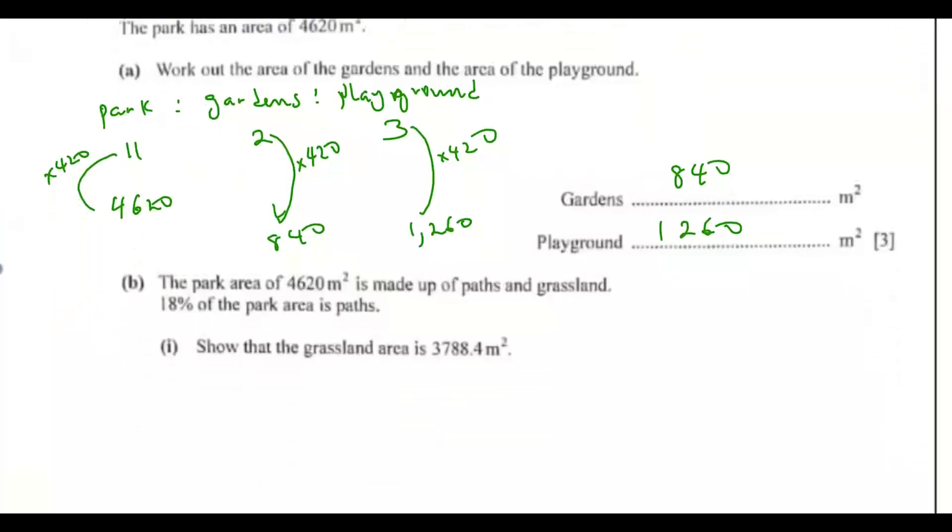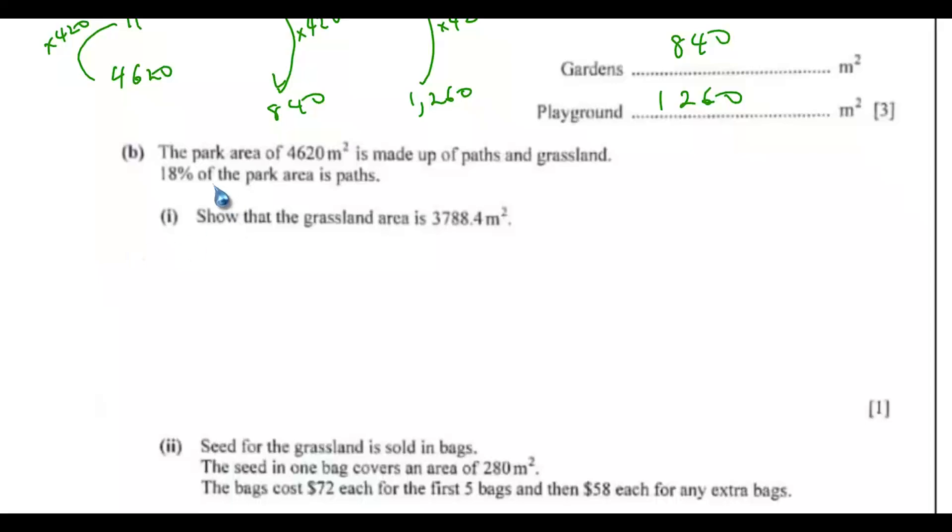Part B, the park area of 4620 meters squared is made up of path and grassland. So 18% of the park area is path. So out of 100%, so 18% belongs to the path. So that means the remaining percent, which is 82, belongs to grassland.